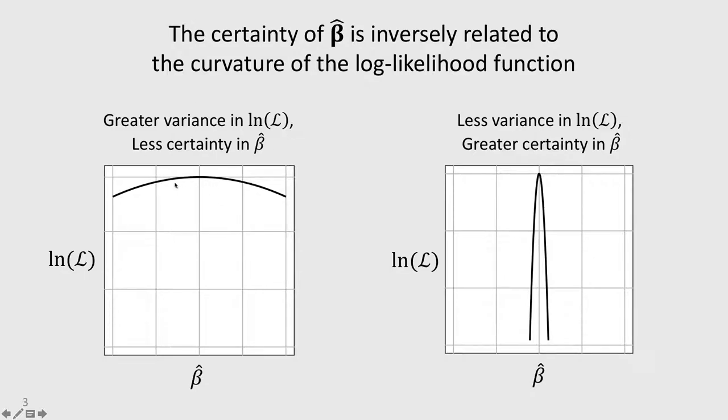when you have a much greater variance in the log likelihood, well, that means you're less certain about beta. And the opposite is true on the right. You have a very narrow band around the best estimate of beta. And so you have very little variance in the likelihood function, which means you're much more certain about this beta coefficient. So there's an inverse relationship between the coefficient beta and the curvature of the log likelihood function.